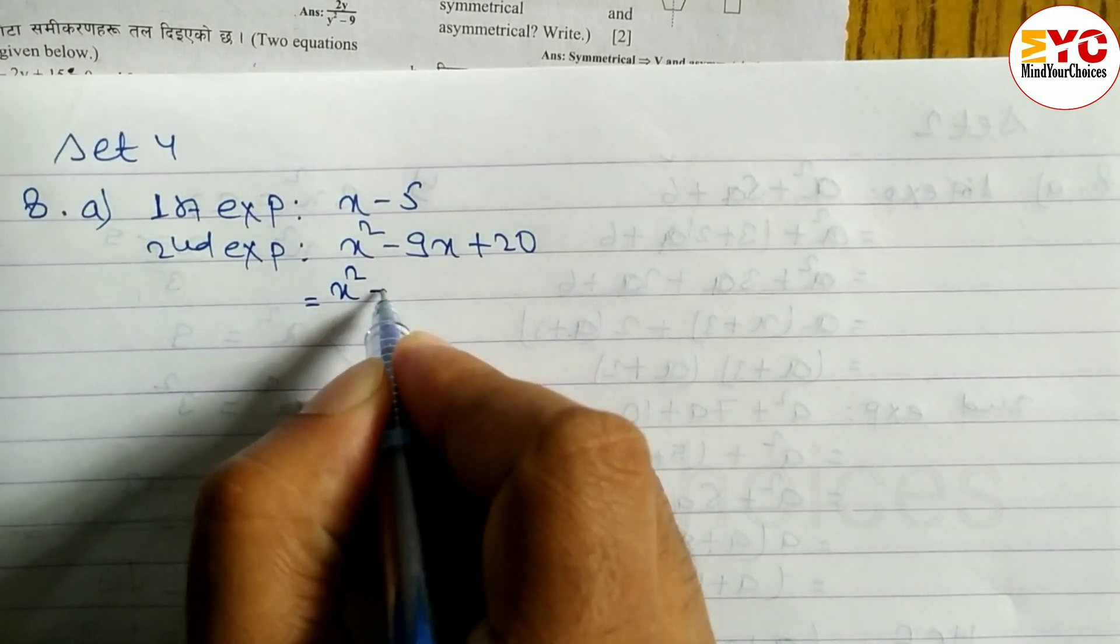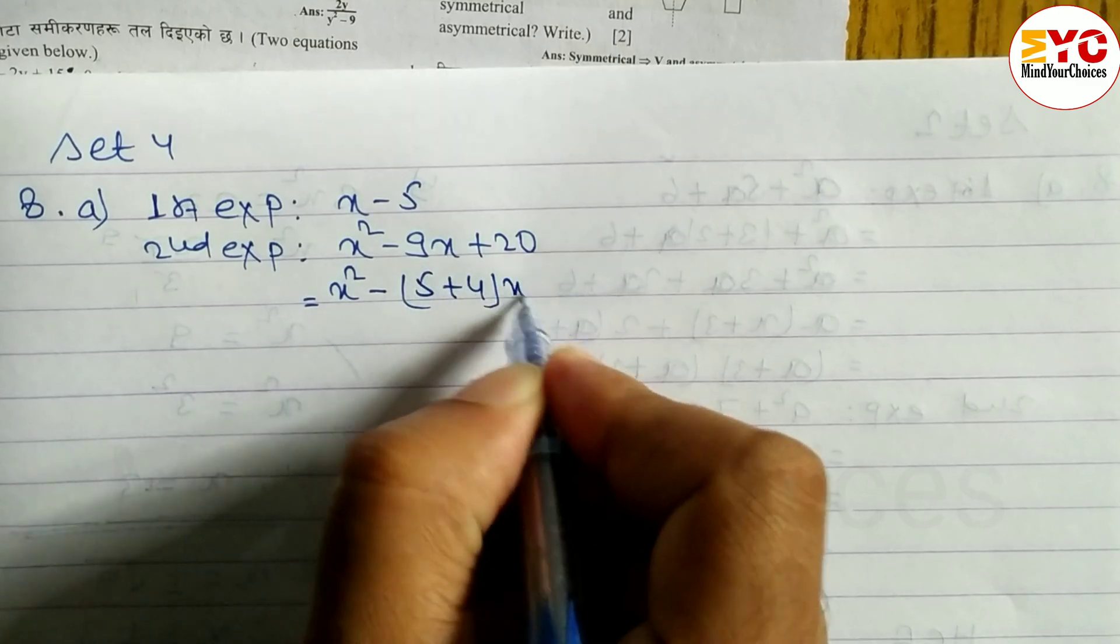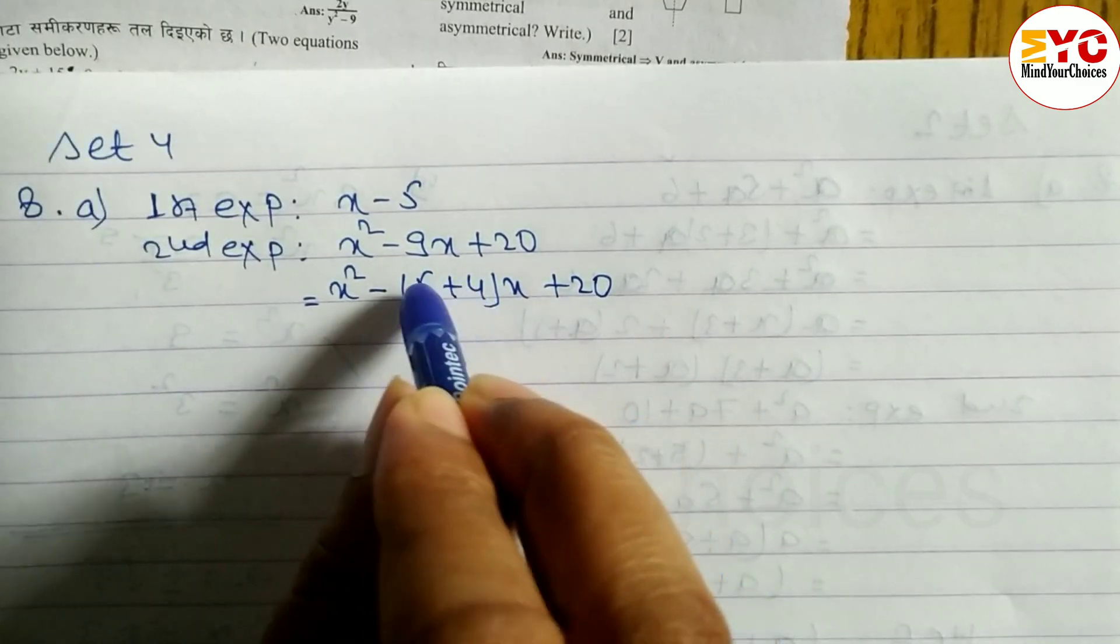What are the factors? x-square minus 9 in place of, we can write 5 plus 4. Or x plus 20. These two numbers when we multiply what do we get? 5, 4, 20.